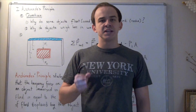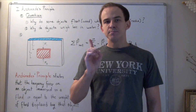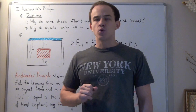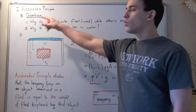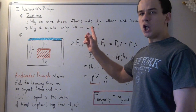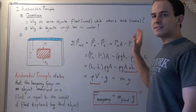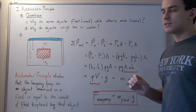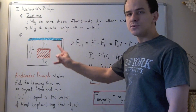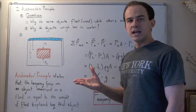Archimedes' Principle can be used to answer some very important but basic questions such as the following two questions. Question number one: why do some objects float, such as wood, while other objects sink, such as rocks? Question number two: why do objects weigh less in water than on land?